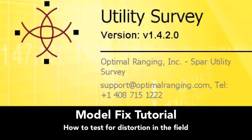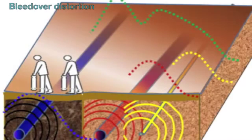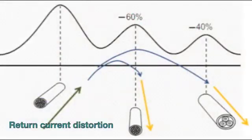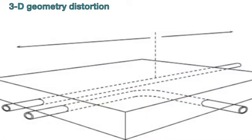This tutorial will demonstrate how to use the ModelFix function to test whether distortion is present. Various forms of distortion in the field can complicate utility locating. For a detailed discussion of the types of distortion and strategies for dealing with them when they arise, see Application Note AN100 and the User Guide.